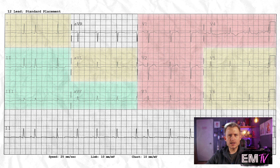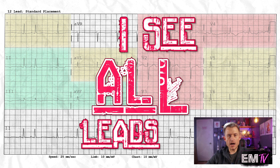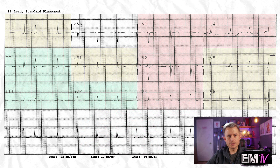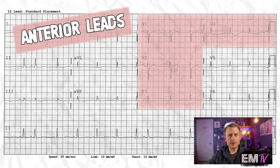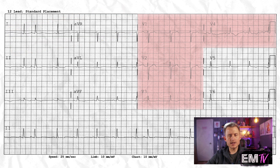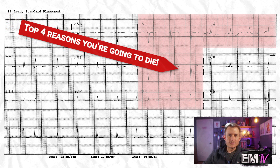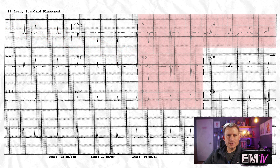One method to analyze these contiguous lead groupings already exists called 'I See All Leads.' I, however, prefer to take a different approach. What I teach my students is to first examine the anterior and septal lead groupings — leads V1, V2, V3, and V4. I treat V1 through V4 almost like an internet listicle or a clickbait article, because V1 through V4 can be looked at as a correlation to the left anterior descending branch of the left coronary artery.